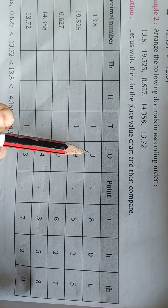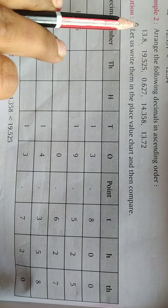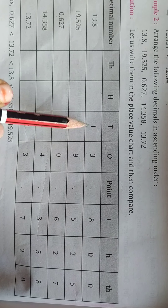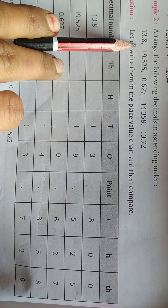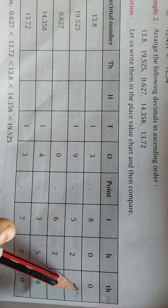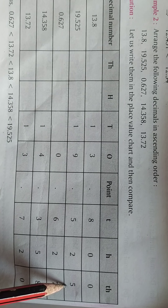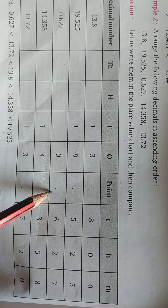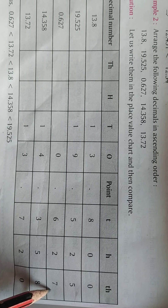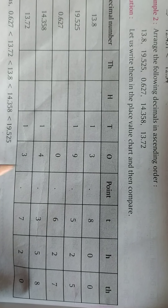Writing the numbers point under point: 13.8 has ones digit 3, tens digit 1, and tenths 8 — write zeros for hundredths and thousandths. Then 19.525, then 0.627, then 14.358, then 13.72 — write zero for the thousandths place. Now they are all converted into like decimals with three decimal places.